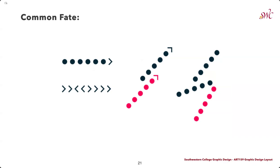Common fate refers to elements that move towards the same direction. These are perceived to be more related than those moving in different directions or not moving at all. The first set doesn't look that related because of the directional cues being shown, whereas the second starts to show that these are related even though they're different colors. On the far right, this shows a closer relationship between the top and bottom line, even though they are different colors, because of their shared direction.